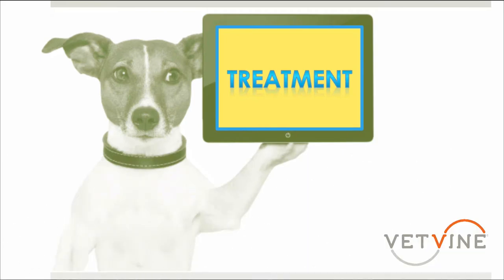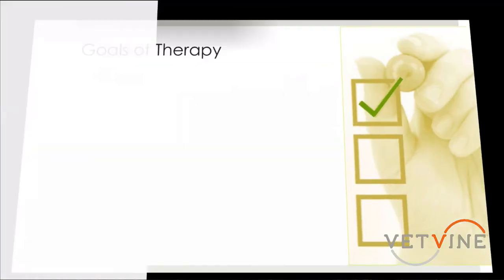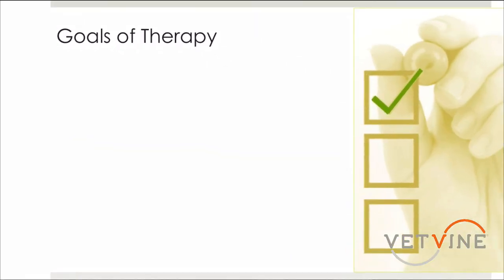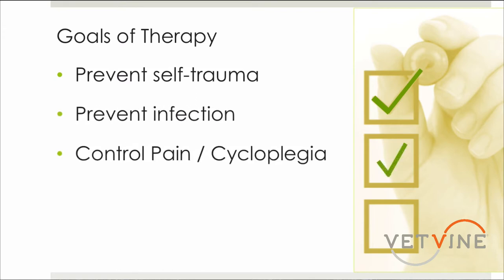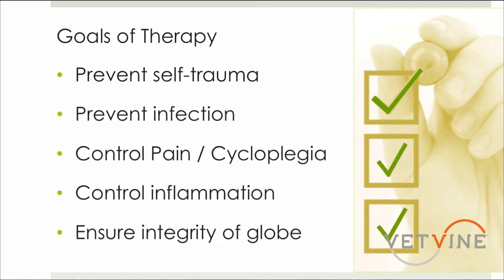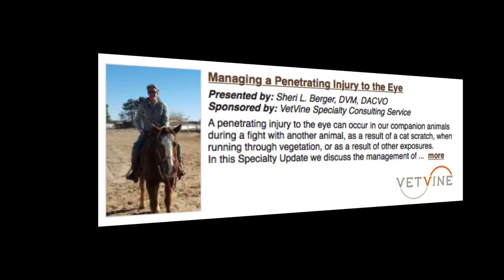So how do we manage these types of injuries? Let's start by defining our goals of therapy. First and foremost, we want to prevent self-trauma. We also want to prevent infection, control pain and inflammation, and ensure the integrity of the globe. Let's talk about each of these and how we might accomplish them.